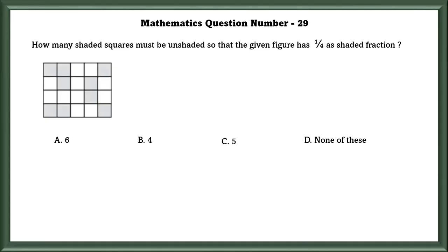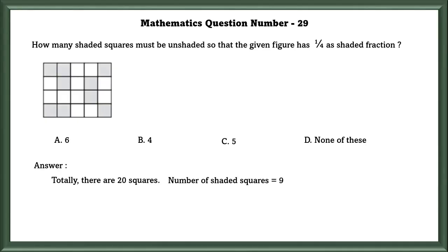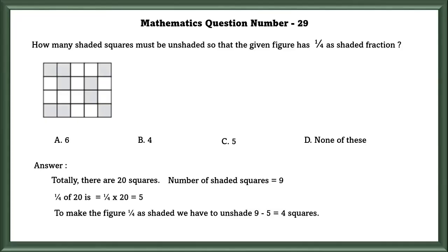Mathematics question number 29: How many shaded squares must be unshaded so that the given figure has 1/4 as the shaded fraction? There are 20 total squares and 9 are shaded. 1/4 of 20 equals 5. So 9 minus 5 equals 4 squares must be unshaded.